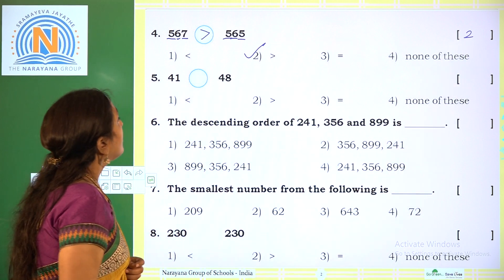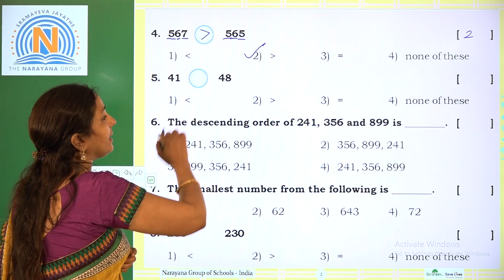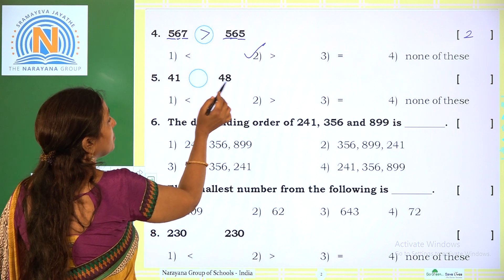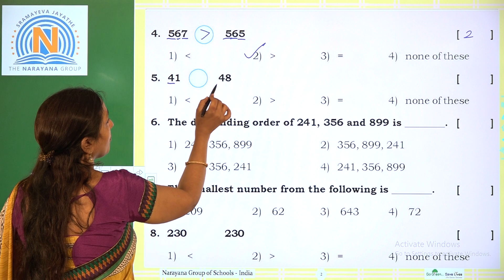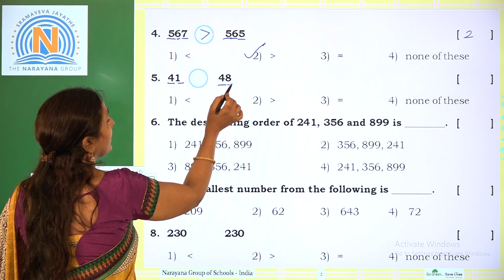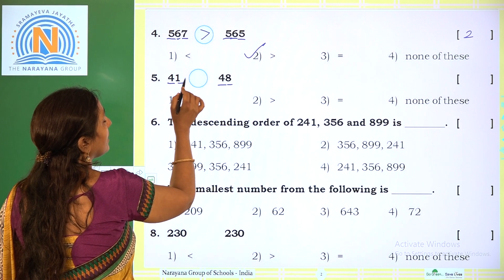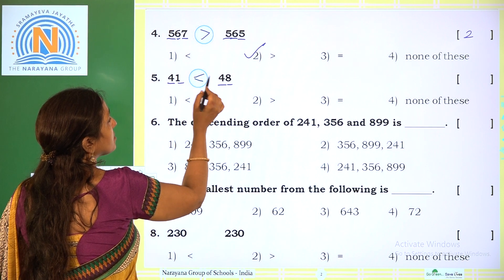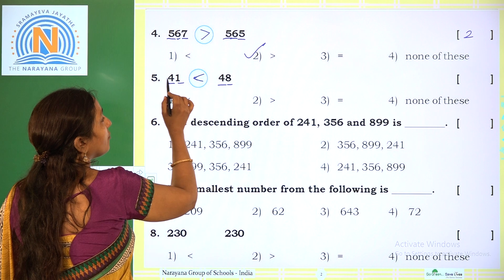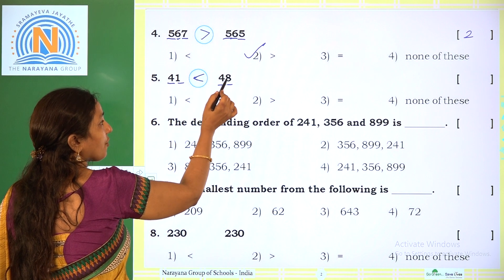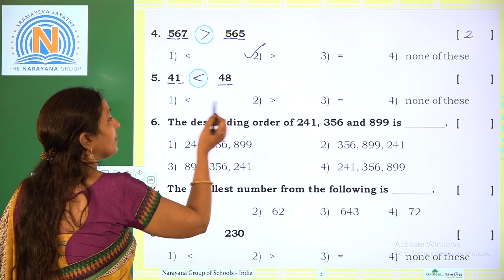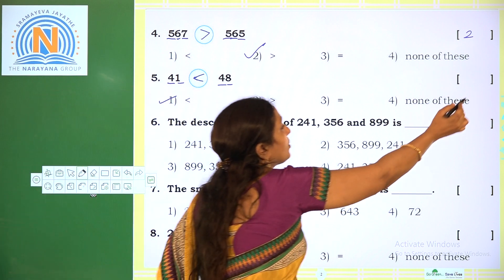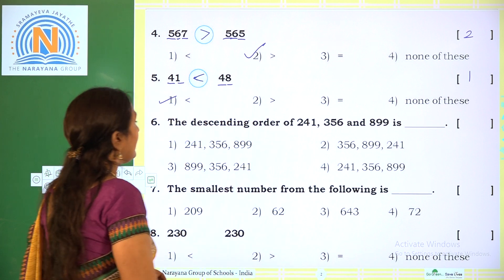Next: compare 41 and 48. Both are 2-digit numbers. The tens digits are both 4. Comparing the units: 1 and 8. So 41 is the smaller number — closed side — and 48 is the open side. So 41 is less than 48. The required option is 1.